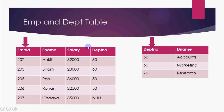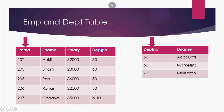Now, notice that department number also appears in the employee table. If I ask you which department an employee belongs to — say department number 60 — you go to the department table, find department number 60, and see it's Marketing. So Bharti works in the Marketing department. The department number column in the employee table links to the department table — this is treated as a foreign key. This foreign key relates the employee table to the department table.